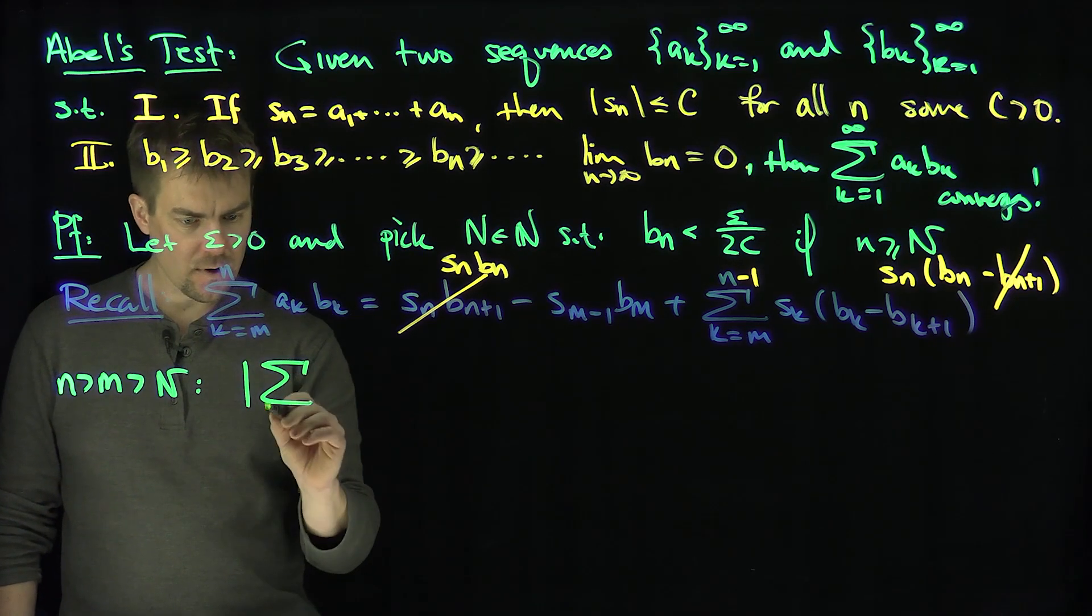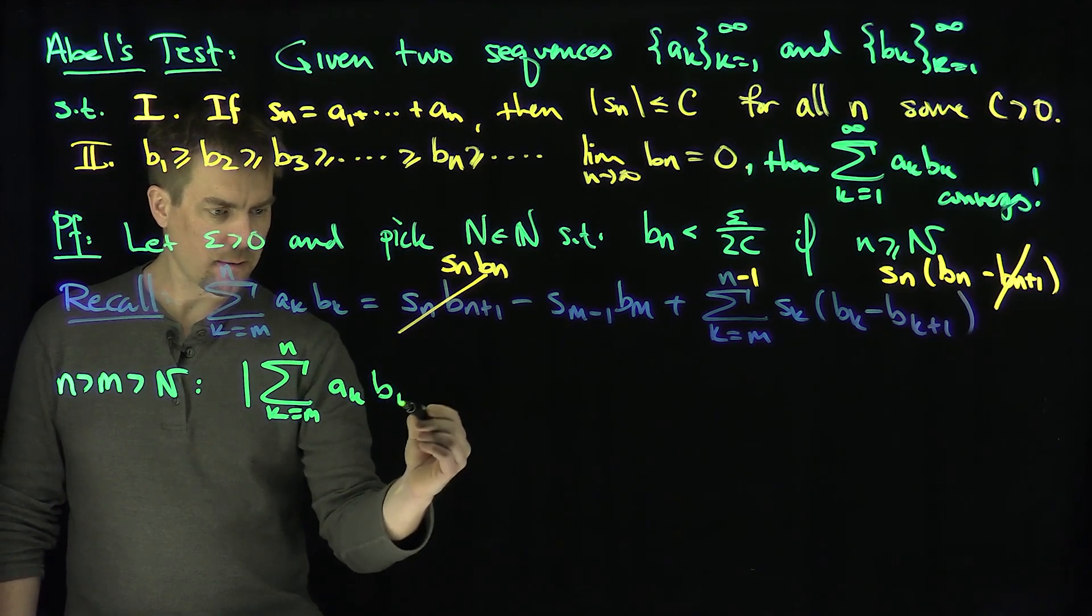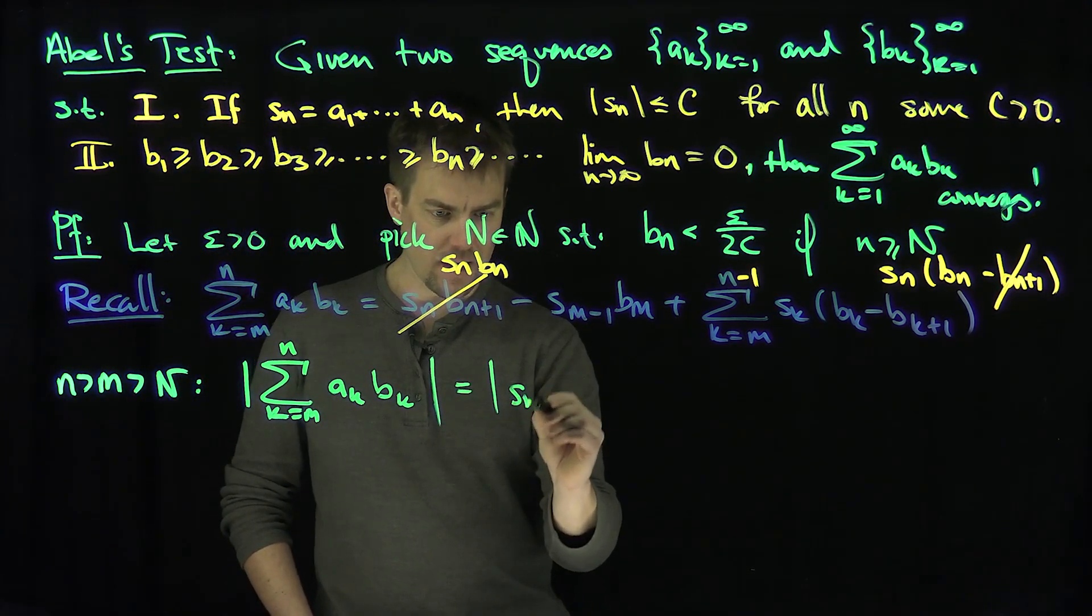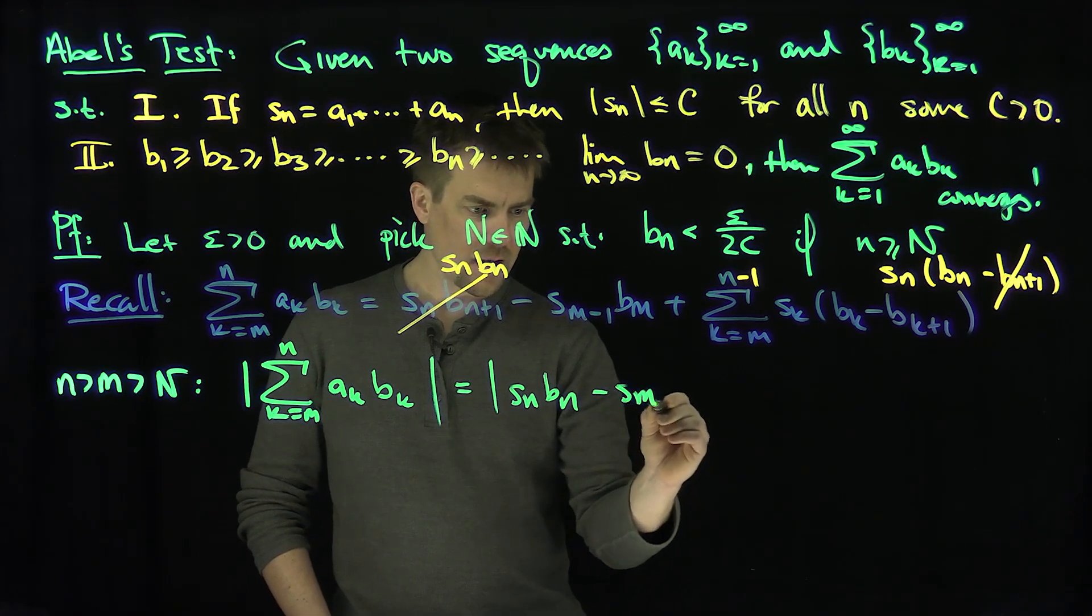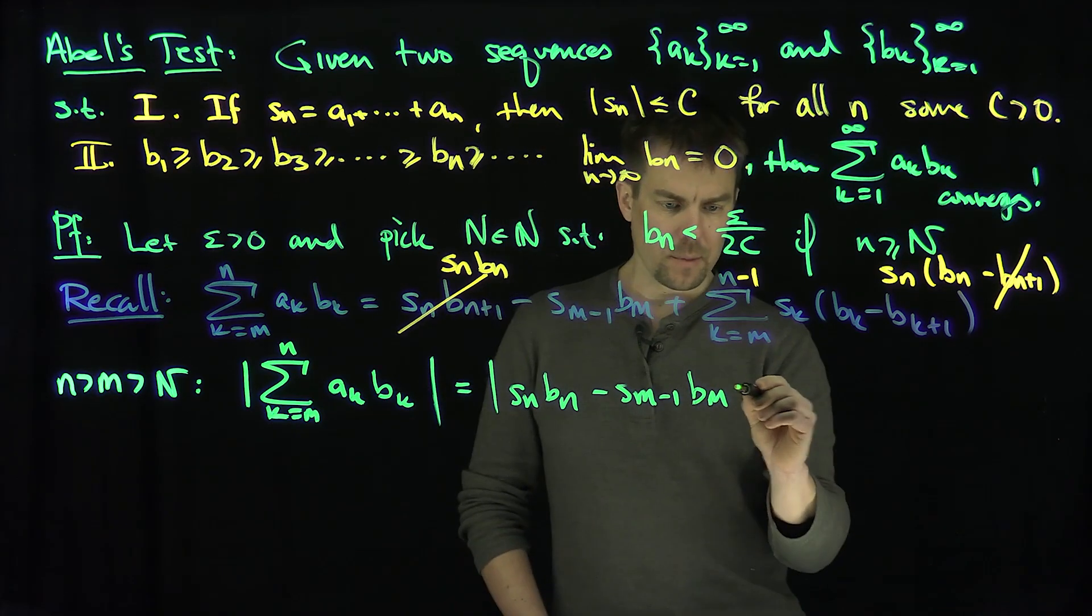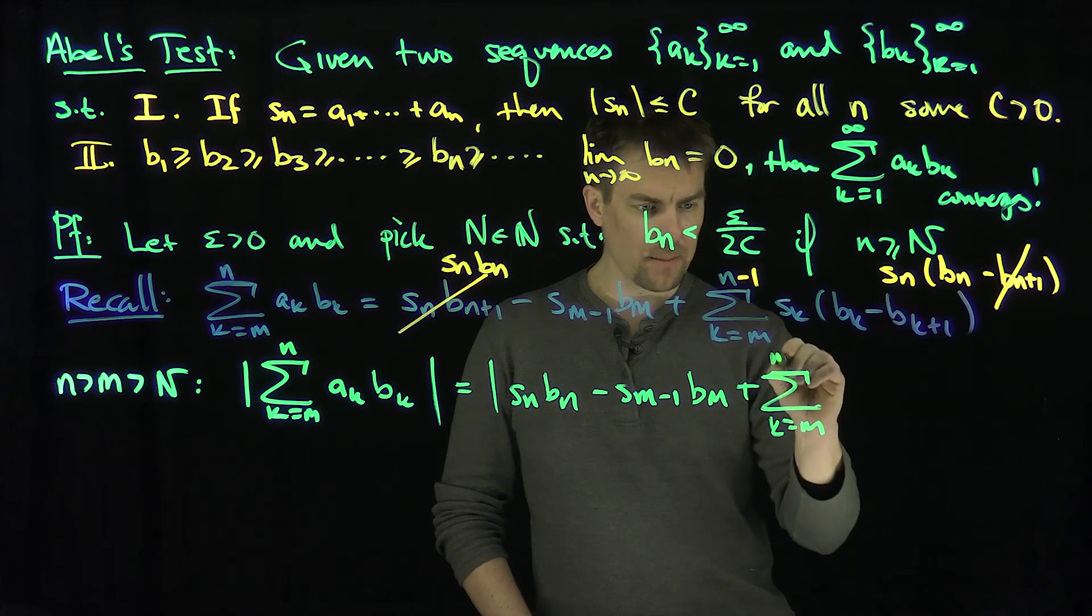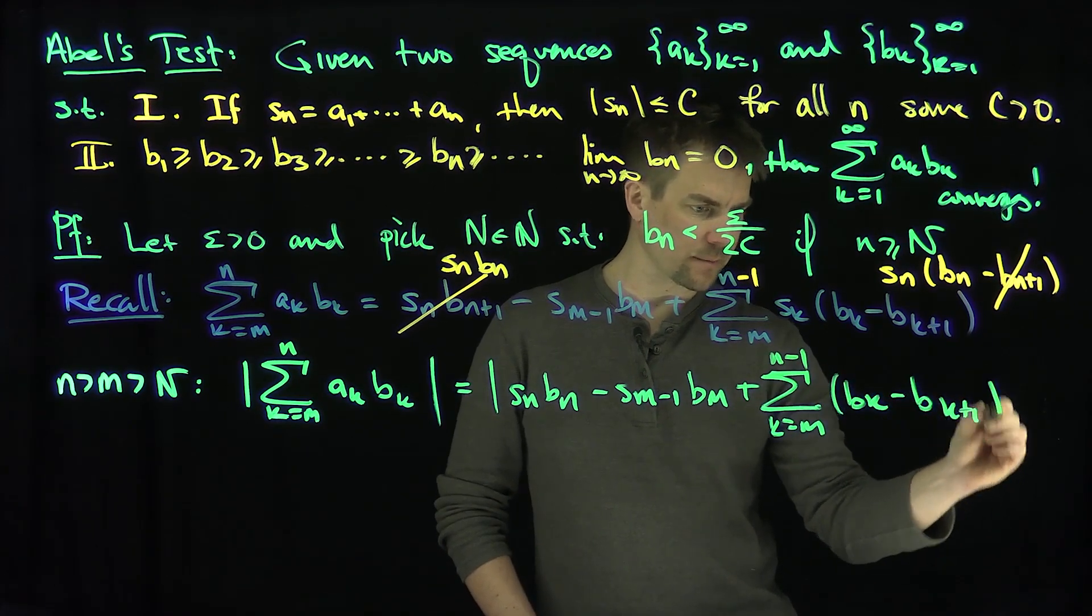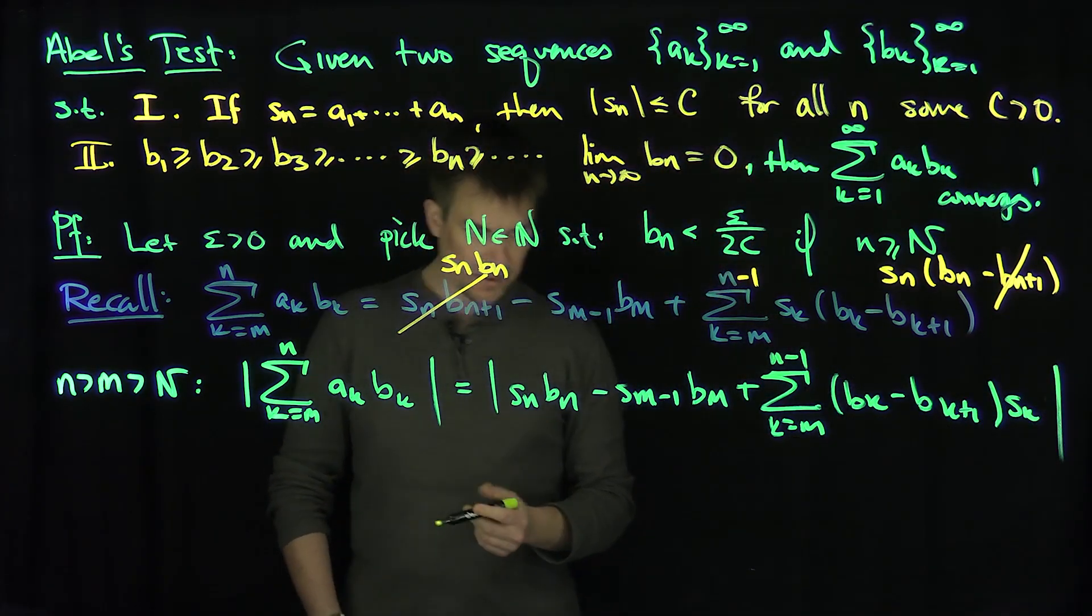The sum k goes from m up to n of a_k b_k. It's going to be s_n b_n minus s_{m-1} b_m, and then plus the sum k goes from m up to n-1 of (b_k - b_{k+1}) times s_k. That's what our expression looks like.